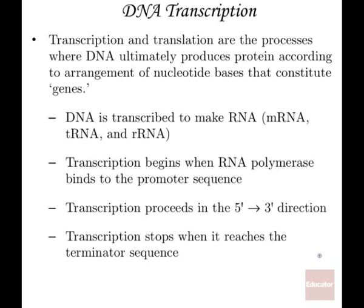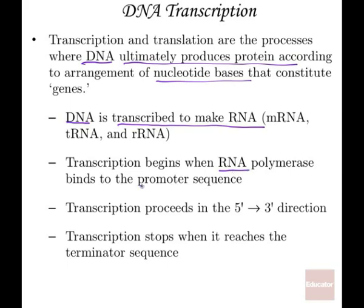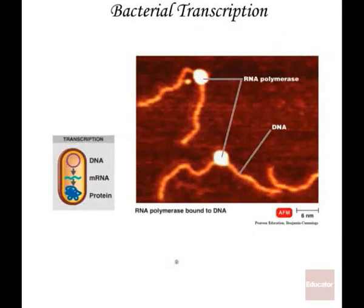DNA transcription in bacteria also works rather similarly to eukaryotic cells — that's where the DNA ultimately produces proteins according to the arrangement of the nucleotide bases we talked about in the genetic code. We take DNA and it gets transcribed to RNA. The RNA polymerase binds to the promoter sequence, transcription begins, and then it stops when we reach the stop codon or terminator sequence. Here is a picture of bacterial transcription, which is very similar to eukaryotic transcription and translation.